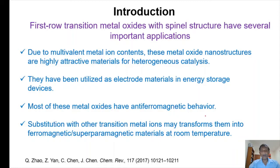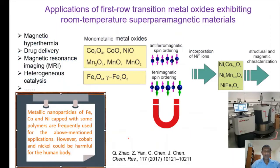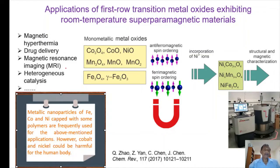While most of these metal oxides have antiferromagnetic behavior, if we introduce nickel ions or other transition metal ions, they can transform to paramagnetic or superparamagnetic even at room temperature. So, if these spinel nanostructures have good superparamagnetic behavior, they can be used for magnetic hyperthermia, drug delivery applications, magnetic resonance imaging contrast agents, and moreover they can be used as heterogeneous catalysts that can be separated by a magnetic field.